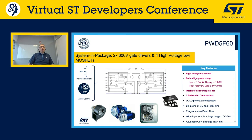The PWD5F60 is an advanced power system-in-package driver integrating a gate driver and four N-channel power MOSFETs in a compact QFN package. The integrated power MOSFETs have an RDS(on) of 1.38 ohm and a 600V drain-source breakdown voltage. The embedded gate driver features two comparators for peak current control or overcurrent protection, an integrated bootstrap diode, fast and slow decay modes, on-board constant off-time peak control, undervoltage protection, and 3.3V to 15V compatible inputs with hysteresis and pull-down.